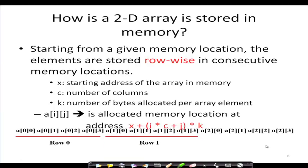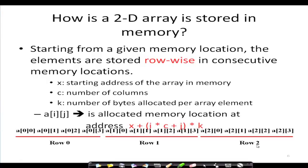This part is row 0, this part is row 1, and this part is row 2. You can see row 1 column 0, row 1 column 1, row 1 column 2, and so forth — that is how it is stored and how we can find out the address of any element.